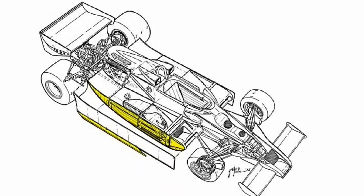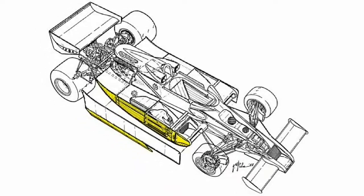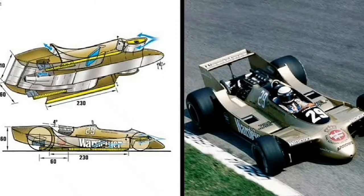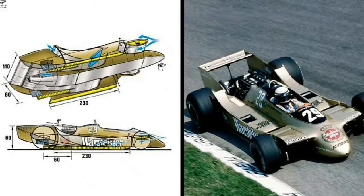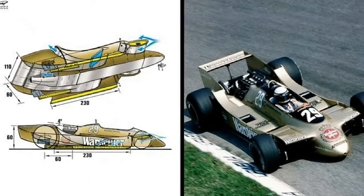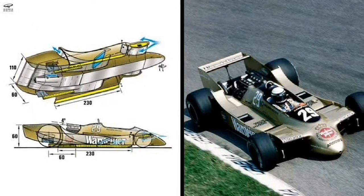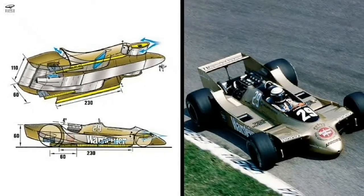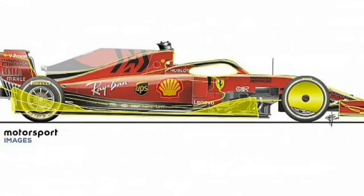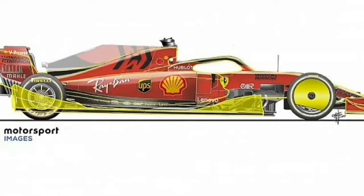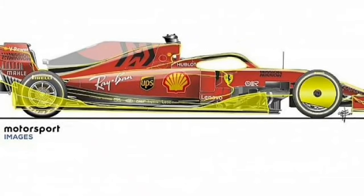In addition, to increase the ground effect, they provided skirts on the side part. These side skirts can actually rub along the surface, sealing the venturi tunnel. The ground effect is also used in the modern era of Formula One to increase downforce.